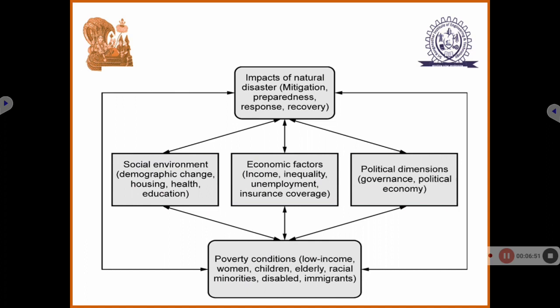Coming to mitigation — the disaster management cycle, which you will learn in the second unit, includes mitigation, preparedness, response, and recovery. This is the cycle that takes place. Finally, the overall effect of disaster often ends in a poverty condition — low income — where people go for whatever job is available, thinking that at least food for the day is enough.